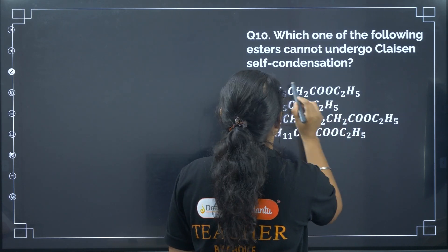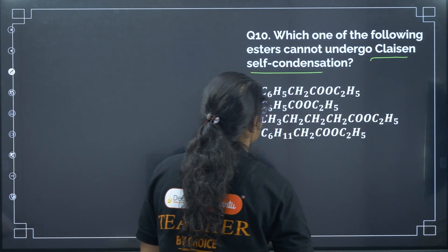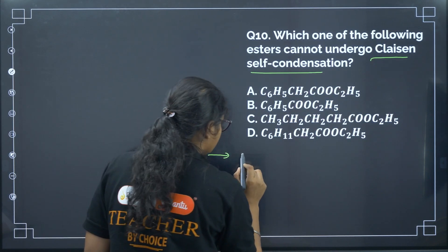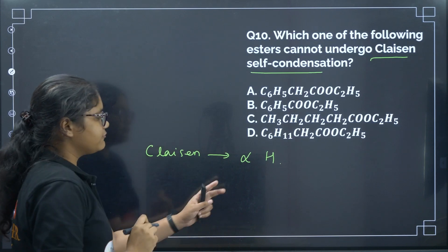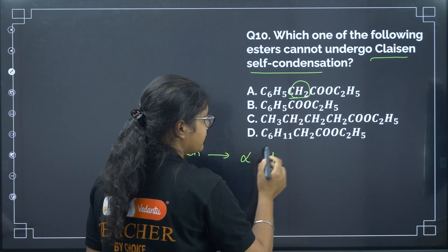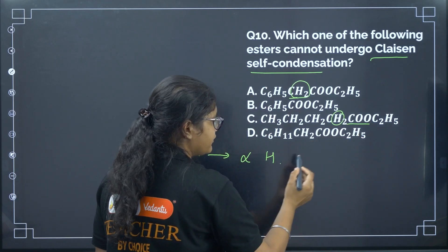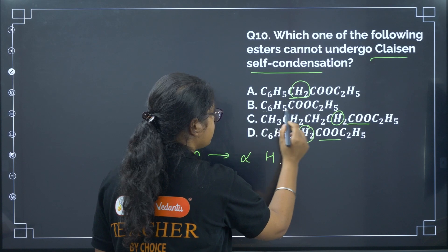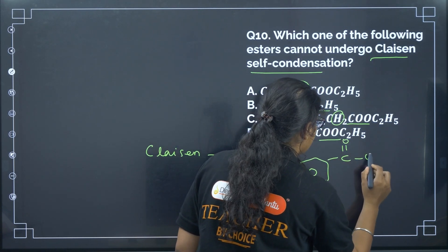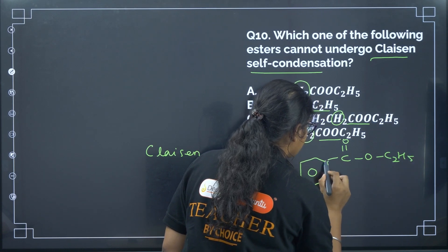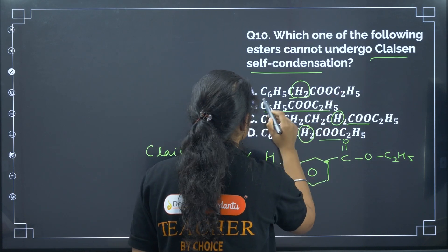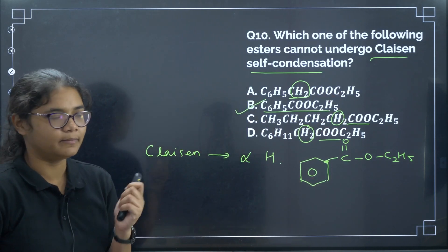Next: which ester cannot undergo Claisen self-condensation? The condition for Claisen self-condensation is the presence of at least one alpha hydrogen adjacent to the ester group. For C6H5-COOC2H5 (ethyl benzoate), the alpha carbon is the benzene ring carbon, which has no alpha hydrogen. Therefore this ester will not undergo Claisen self-condensation. Correct answer: option B.